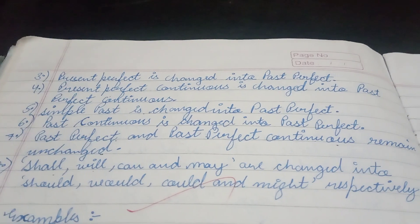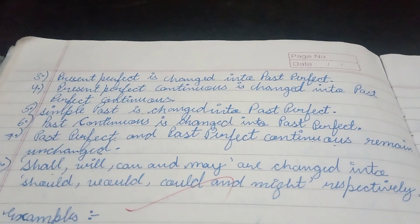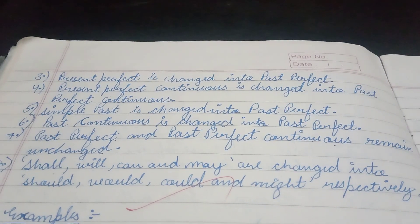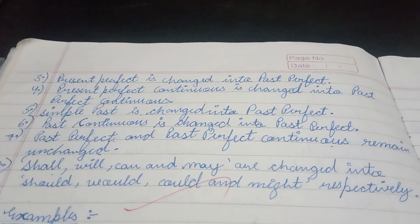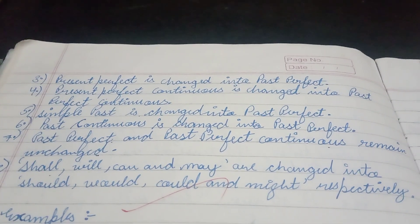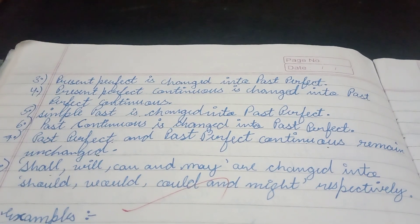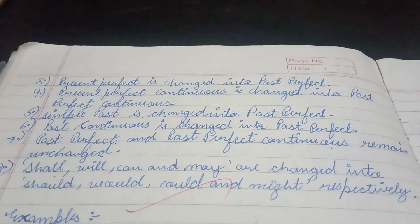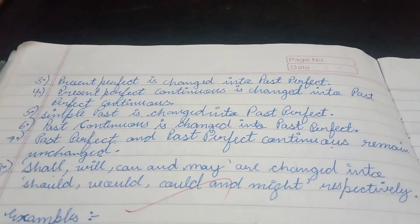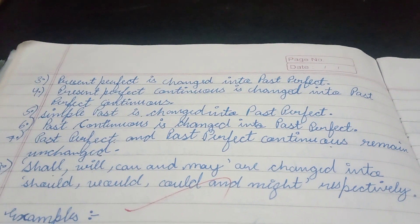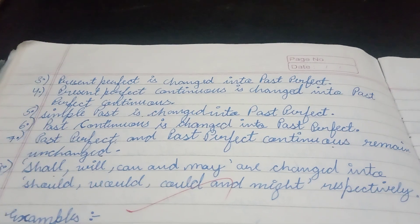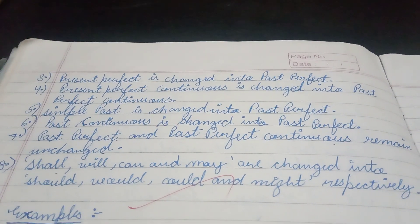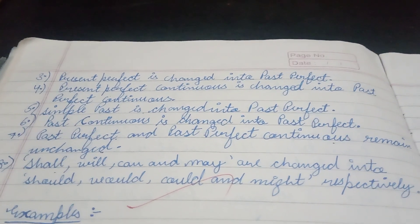Past continuous is changed into past perfect. Past perfect and past perfect continuous remain unchanged, because there is no corresponding past tense for past perfect and past perfect continuous.